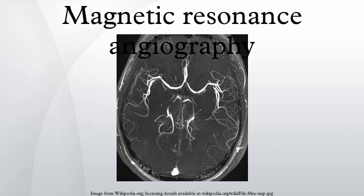BOLD Venography or Susceptibility Weighted Imaging: this method exploits the susceptibility differences between tissues and uses the phase image to detect these differences. The magnitude and phase data are combined to produce an enhanced contrast magnitude image which is exquisitely sensitive to venous blood, hemorrhage and iron storage. The imaging of venous blood with SWI is a blood oxygen level dependent technique, which is why it was referred to as BOLD venography. Due to its sensitivity to venous blood, SWI is commonly used in traumatic brain injuries and for high resolution brain venographies.